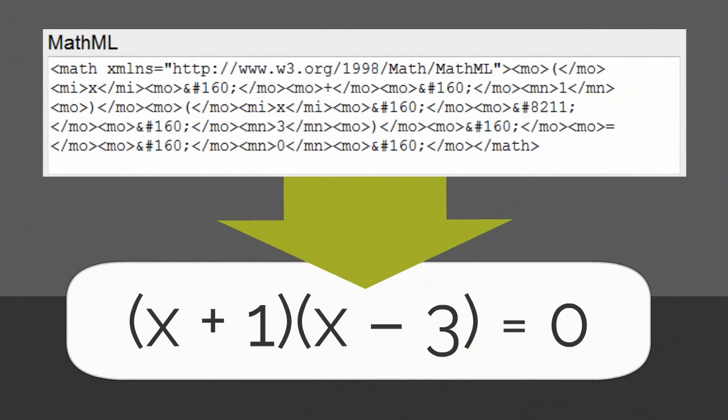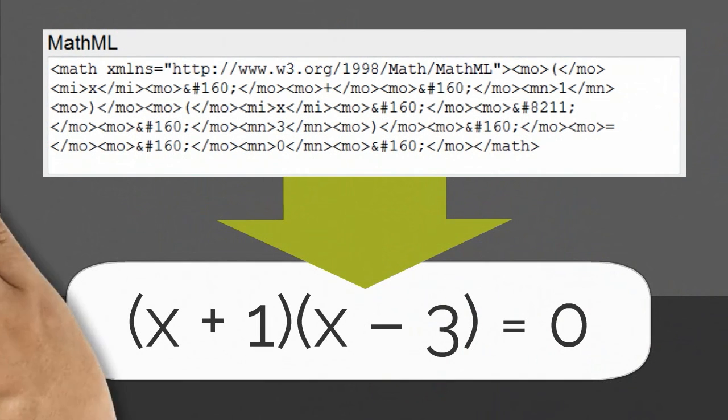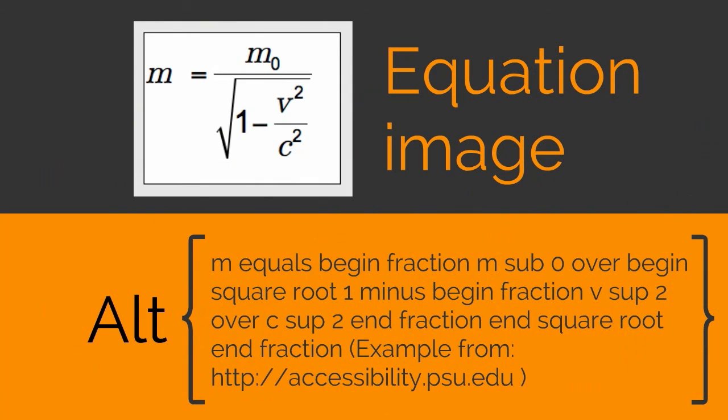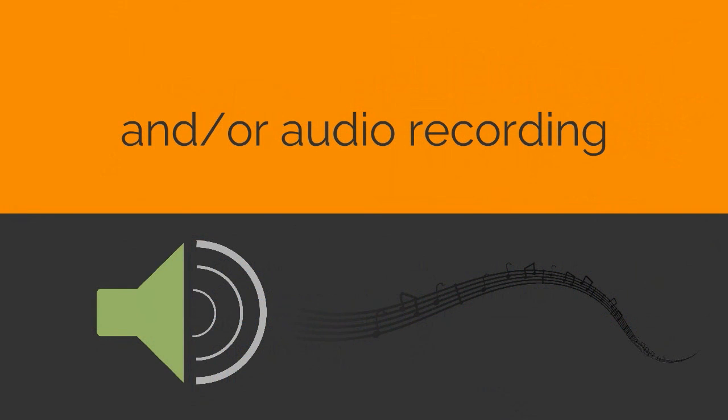You may encounter a situation where there is an important website linked to in a course that has image equations and they cannot be translated into MathML. In these situations, you can ask the creators of the website to add equivalent text in the alt tag of the images and or create audio files with someone verbalizing the equations.